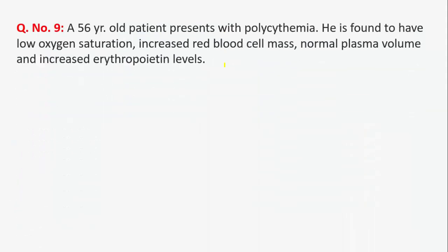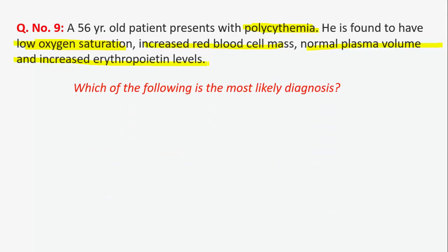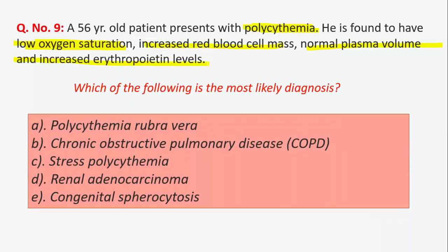Question 9: a 56-year-old patient presents with polycythemia. He is found to have low oxygen saturation, increased red cell mass, normal plasma volume, and increased erythropoietin levels. Which of the following is the most likely diagnosis? The patient has polycythemia with low oxygen saturation, increased red cell mass, and increased erythropoietin levels, so the best option is COPD.